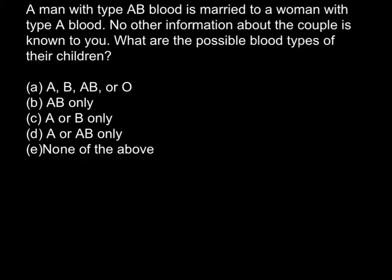And believe me, it's very easy, and in just a few minutes you would be able to solve such problems on your own very easily. So here is a problem. A man with type AB blood is married to a woman with type A blood. No other information about the couple is known to you. What are the possible blood types of their children? And here in answer A we have all four different types of blood that is possible.